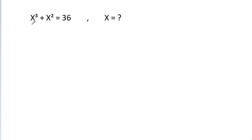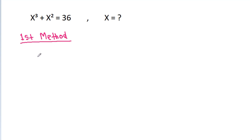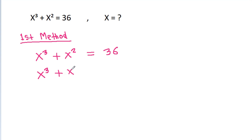In this video, we have given that x cubed plus x squared is equal to 36, then x is equal to what? So, first method: we have x cubed plus x squared is equal to 36, and it is x cubed plus x squared minus 36 is equal to 0.